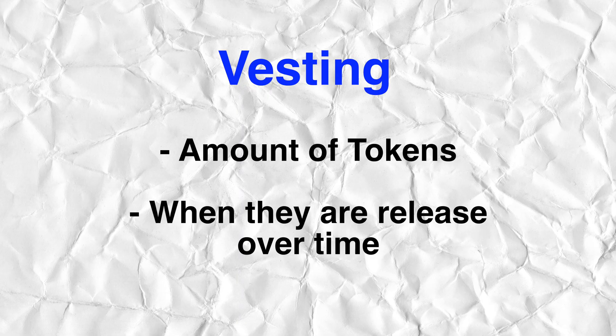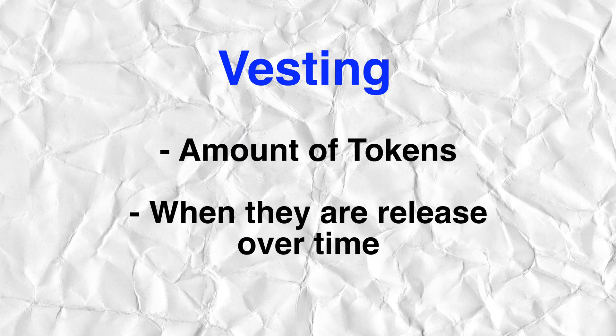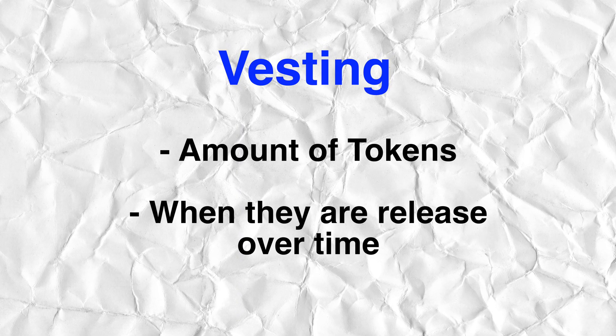Finally, the vesting schedule — the amount of tokens allocated and when they are released over a period of time. There are three key definitions: TGE (token generation event), the cliff, and the emission schedule. To explain these I'll use ILV, the Illuvium token, another one of my favorite projects.